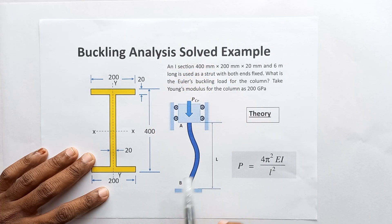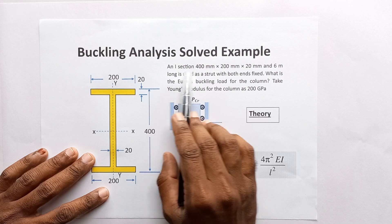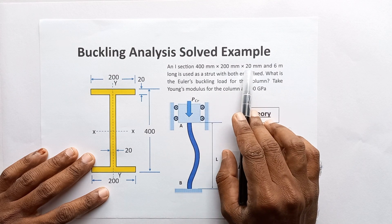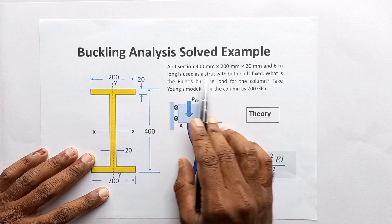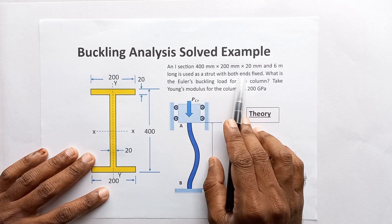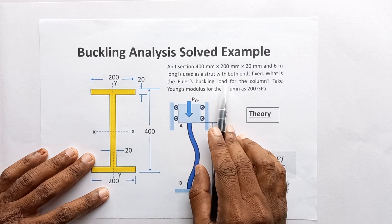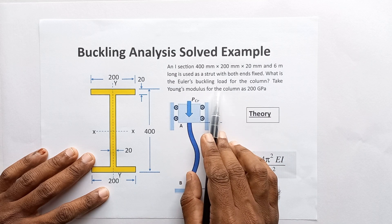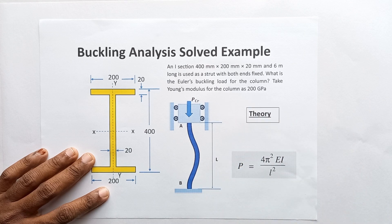In this video I'm going to explain solving of this buckling load problem. An I-section 400mm × 200mm × 20mm and 6 meters long is used as a strut with both ends fixed supported. What is the Euler buckling load for the column? Take the elastic modulus of the material as 200 gigapascal.